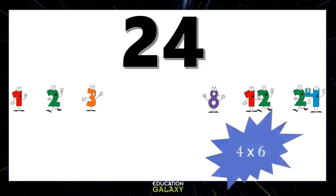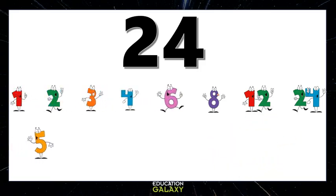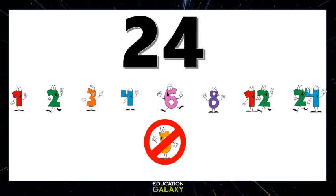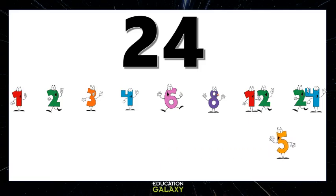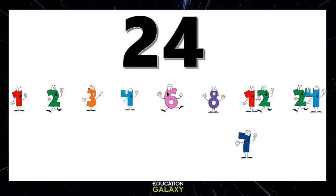4 times 6 are factors. 5 times nothing equals 24 — it doesn't go into 24 evenly, so 5 is out. We already listed 6. 7 times nothing is 24 either, so 7 is out. There, we have all the factors of 24.